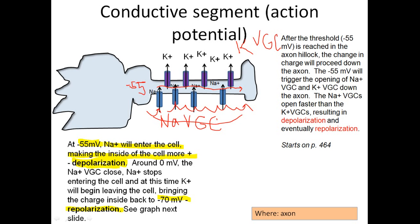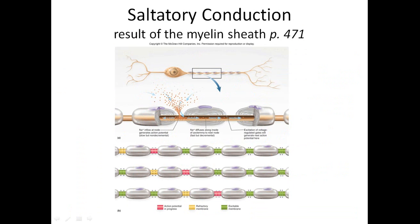One thing that occurs in myelinated neurons is called saltatory conduction. Saltatory conduction occurs on myelinated axons. In the neurofibril nodes of myelinated neurons, the sodium and potassium voltage-gated channels are concentrated. The action potential essentially hops — 'saltatory' means jump.